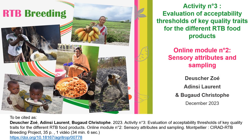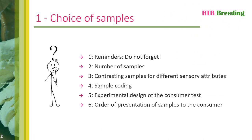Hello everyone, welcome to this second module for evaluating the acceptability thresholds of quality threats for roots, tubers and bananas. This module deals with the choice of sensory attributes and sampling. It was produced by Zoé Deschers and revised by Christophe Bugot and Adency Laurent. We will start this module by dealing with the various issues surrounding sampling, starting with a few reminders, followed by the number of samples to choose, the contrast between samples, sample nomination and the experimental design to be used in the consumer test.